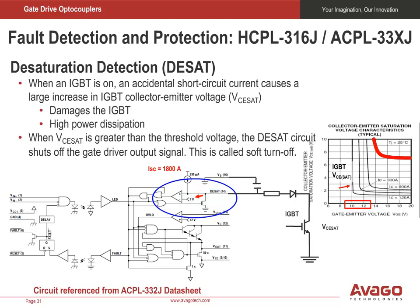During the IGBT's turn-off period, a tiny transistor is turned on to discharge the desaturation capacitor to 0 volts. Immediately after IGBT turn-on, the tiny transistor is turned off to allow the 250 microamp constant current to flow, either to the capacitor or directly to the IGBT, depending on which has the lower voltage path. If the IGBT is turned on and saturates normally to around 2 volts, the constant current will flow to the desaturation capacitor first until it reaches 2.7 volts, and from then onwards the constant current will flow through the desaturation diode and through the IGBT. As the desaturation capacitor voltage is only 2.7 volts, which is lower than the desaturation threshold of 7 volts, the protection circuit will not be activated.